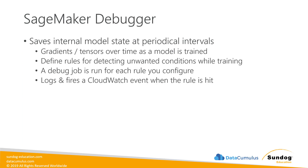They also rolled out something that I think is maybe the coolest part of all this: SageMaker Debugger. A big problem in developing large distributed machine learning models is that they're very hard to debug. You can't just step through them because they're distributed across many machines and very complicated. Their solution with SageMaker Debugger is to save the internal state of the model at periodic intervals. As your model is being trained, it takes snapshots of all the gradients and tensors over time that you can dig into.